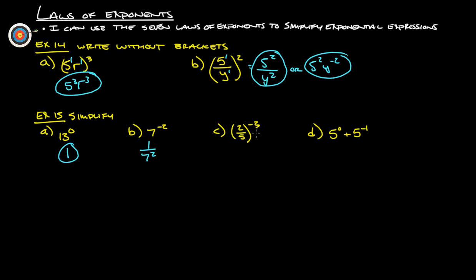2 over 5, to the negative 3rd. Remember that's 2 to the 1st over 5 to the 1st, so that's 2 to the negative 3rd over 5 to the negative 3rd, because 1 times negative 3 is negative 3 for both. Now we move 2 to the negative 3rd to the bottom and 5 to the negative 3rd to the top, giving us 5 to the positive 3rd over 2 to the positive 3rd.